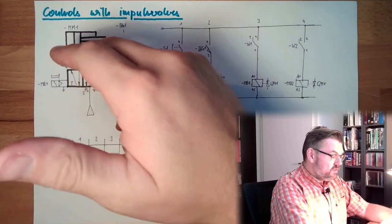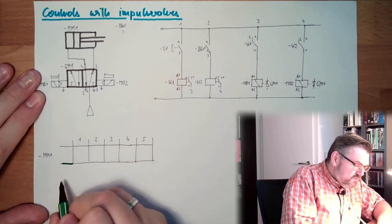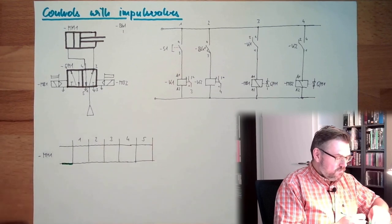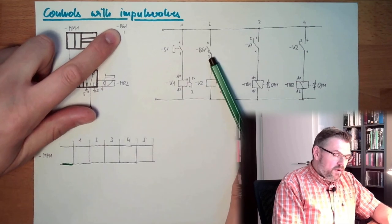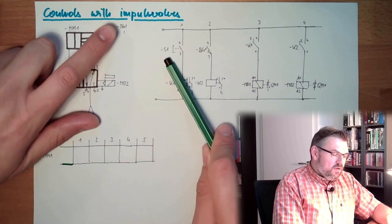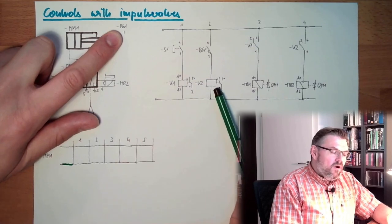So let's assume our cylinder is currently inside, so at zero position we are inside. And then, let's have a look there. BG1 is not operated, it's like that. S1 is not operated, it's like that. So this means K1 and K2 are powerless.